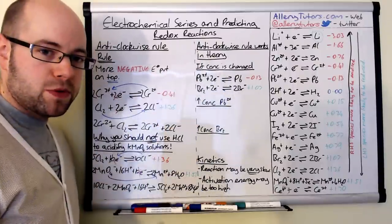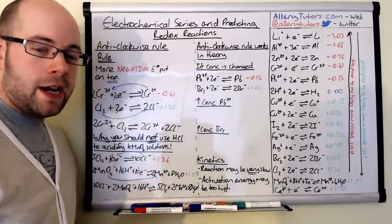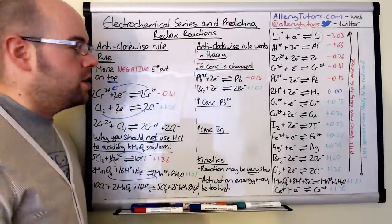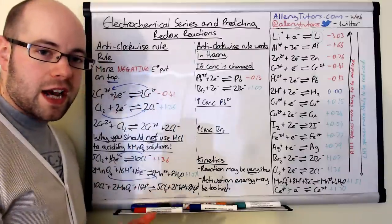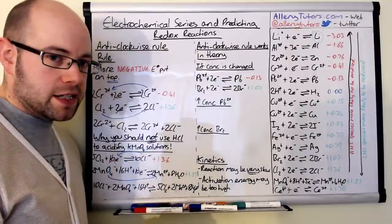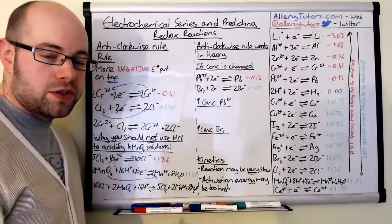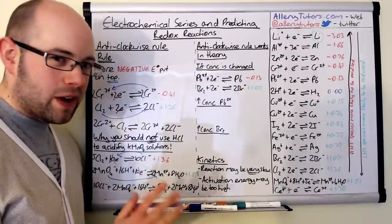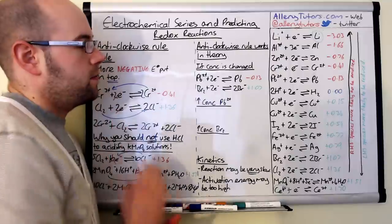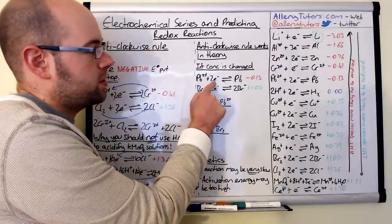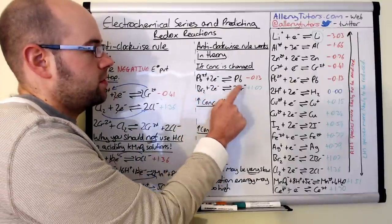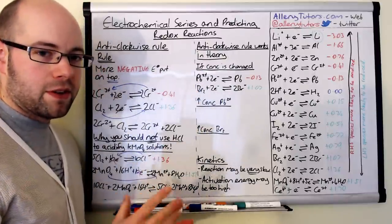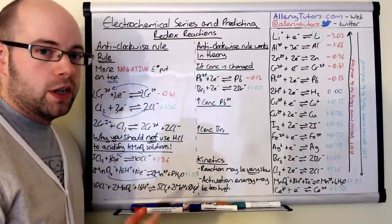Moving on to problems with the anti-clockwise rule. The rule works in theory, but in practice reactions may not appear to actually work. One issue is the effect of concentration. Remember, the anti-clockwise rule uses standard conditions: 100 kPa pressure, 298 K, and all solution concentrations at 1 mol dm−3. This is very difficult to achieve in reality, so values can change. For example, here we have two half equations: Pb2+ + 2e− → Pb, and Br2 + 2e− → 2Br−, with their E0 values.